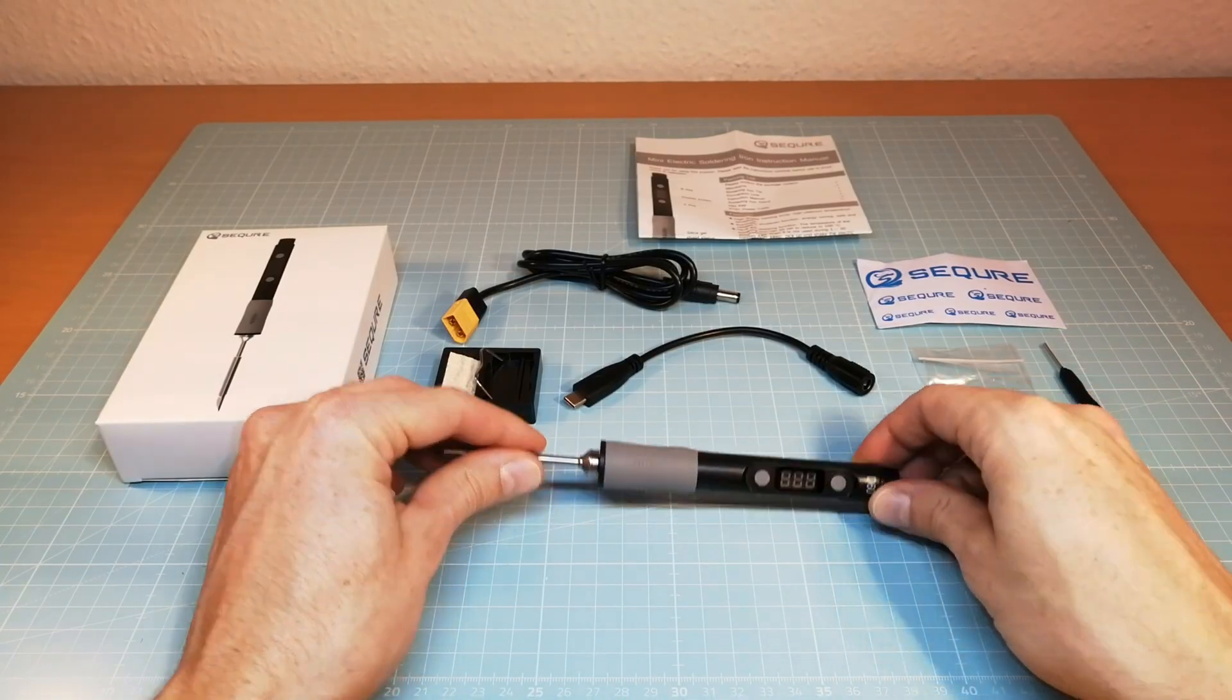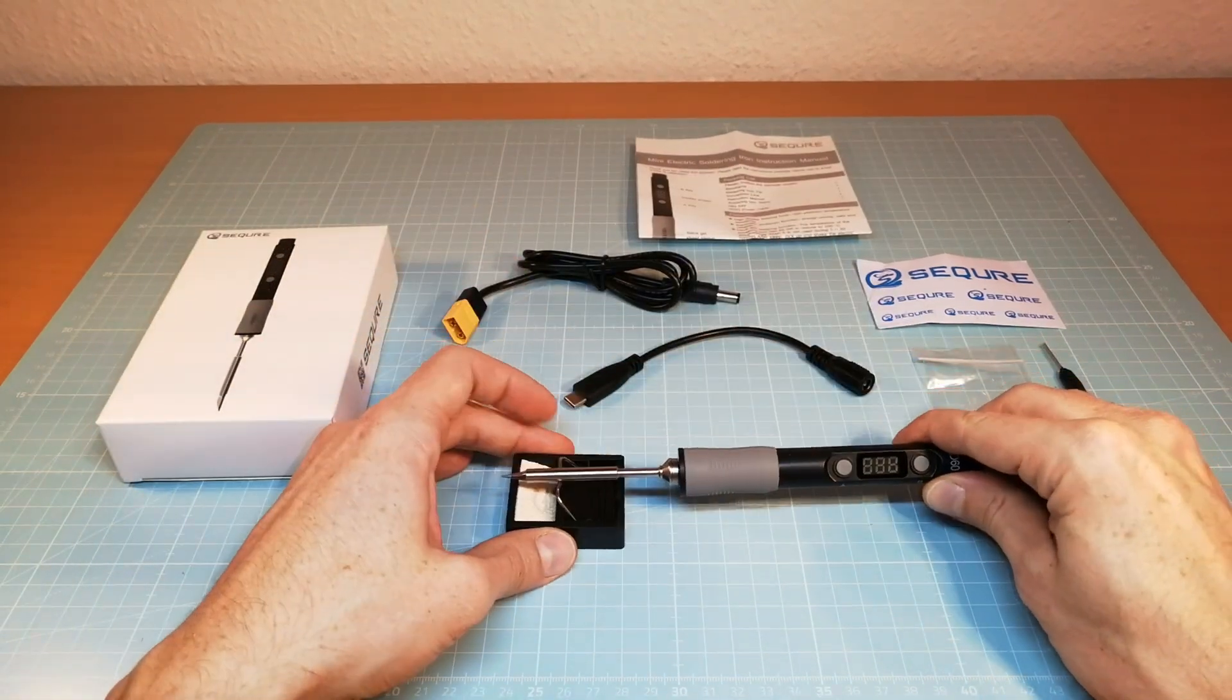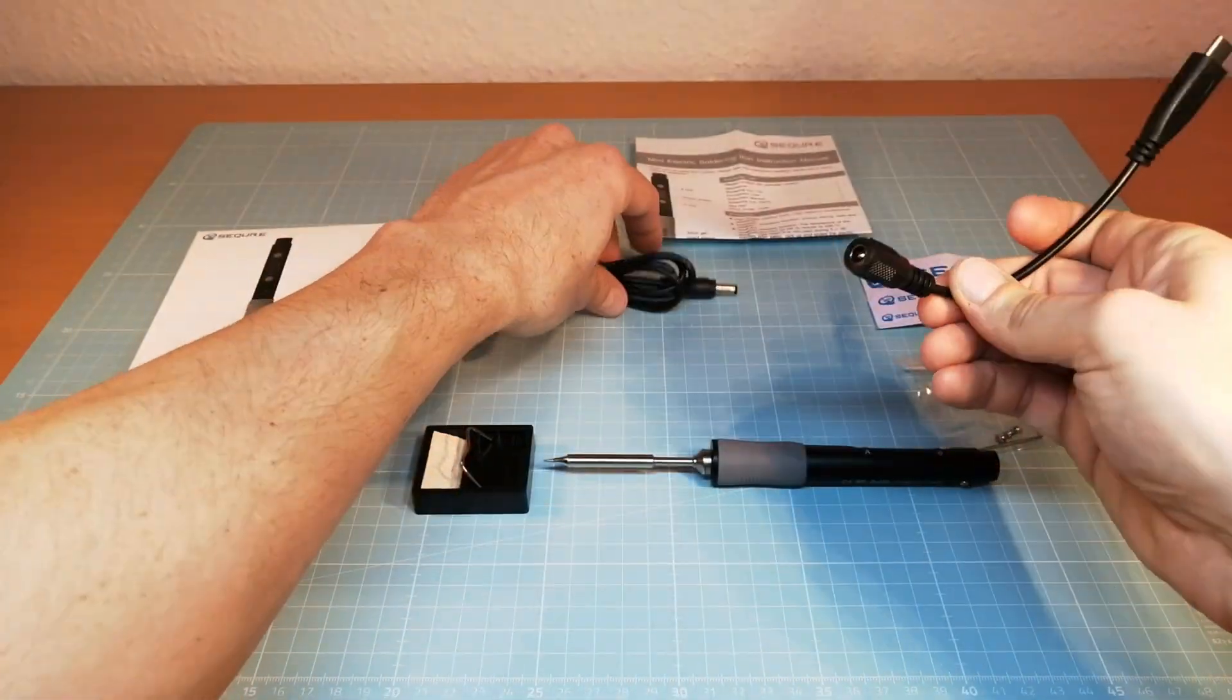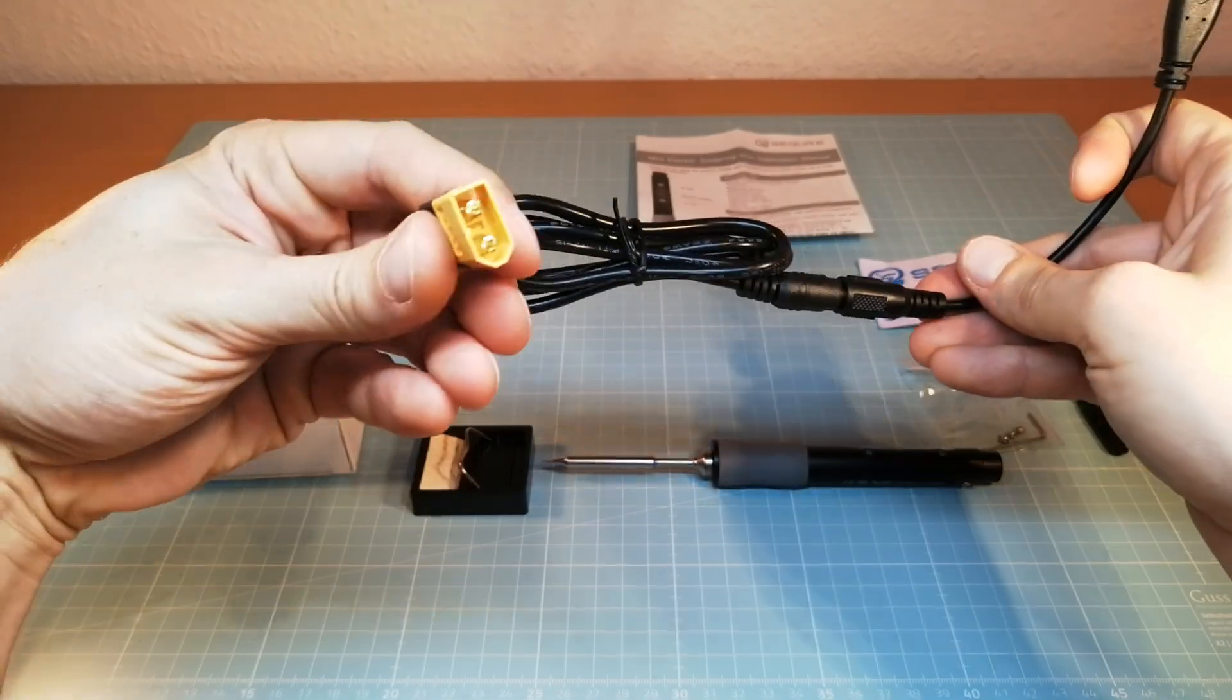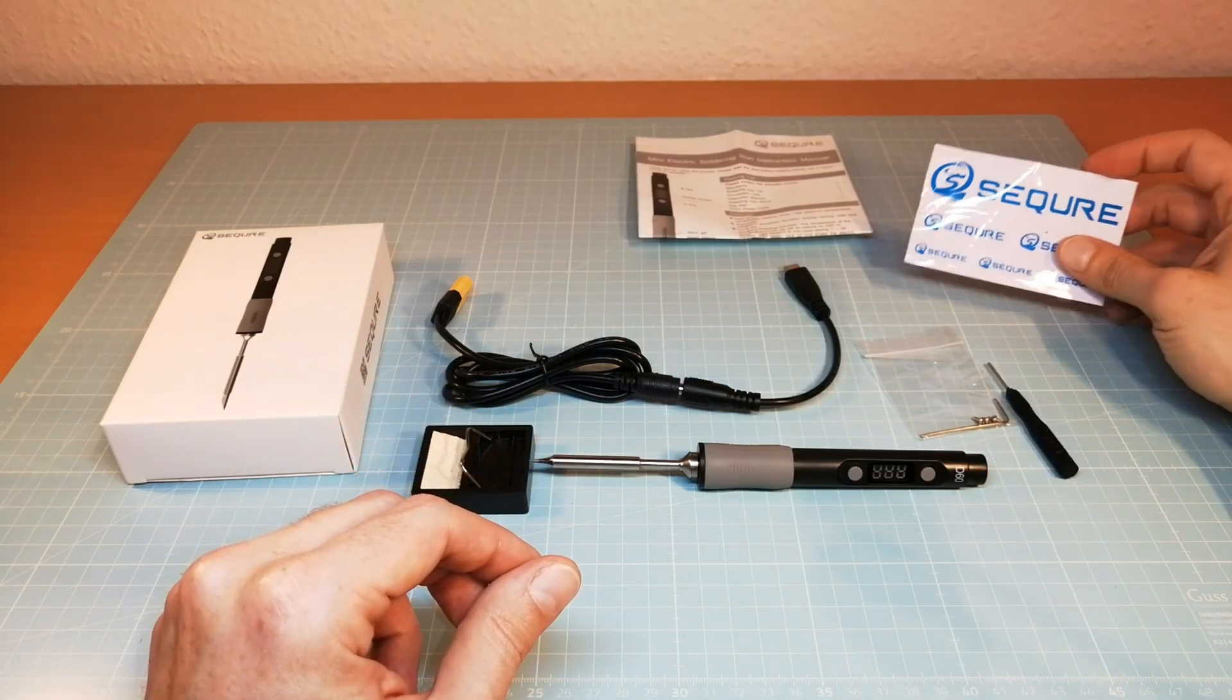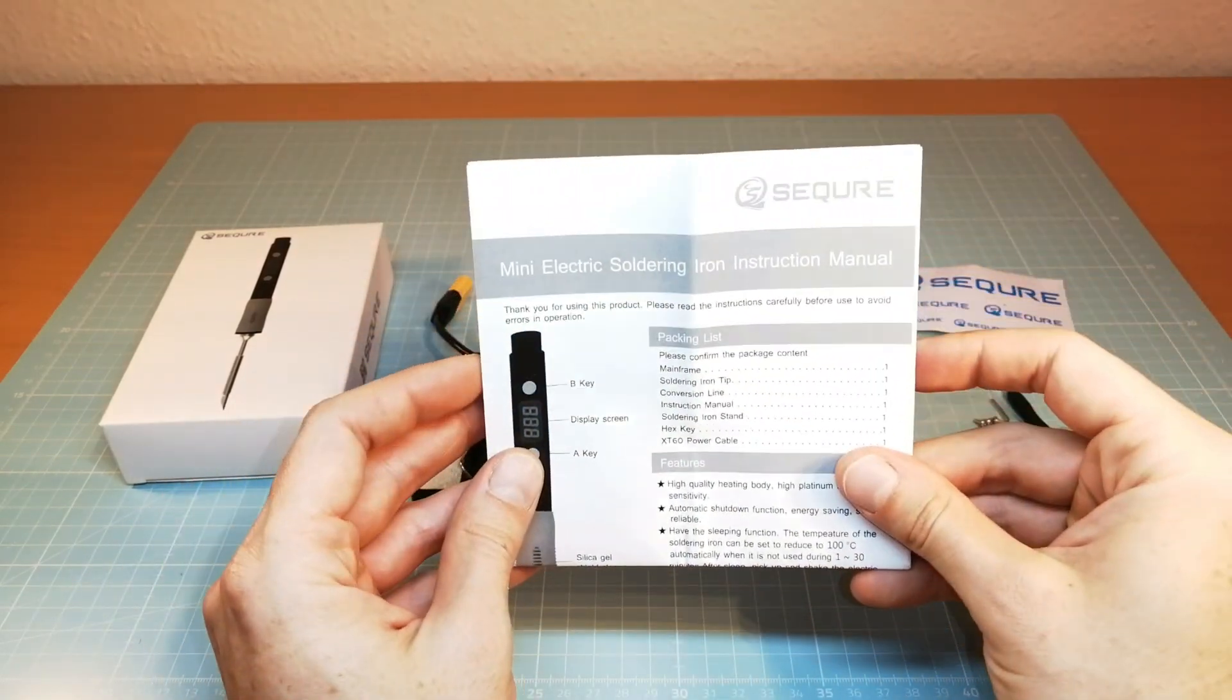The Secure SGD60B soldering iron kit also comes with a soldering iron stand. We also get a USB-C connection interface and a XT60 adapter for powering the SGD60 from a 3-6s battery. We also get some tools for maintenance and some Secure stickers. Last, we also get a very detailed user manual.